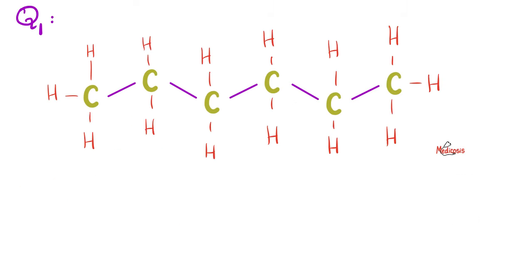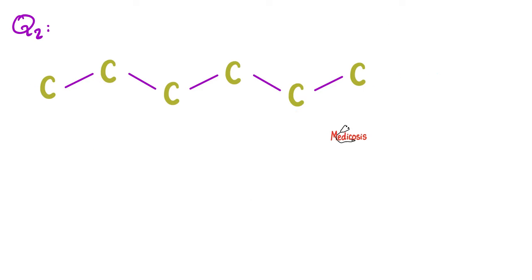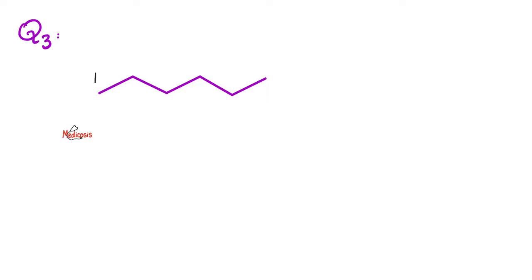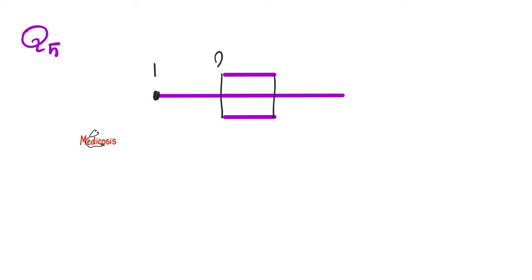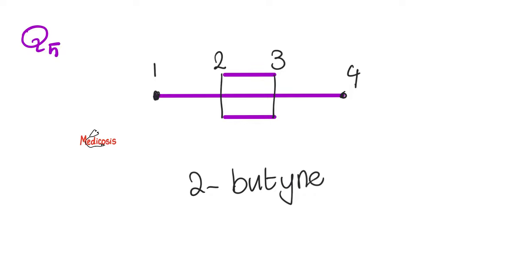Here is a six-carbon chain with all single bonds: hexane, a type of alkane. The skeletal structure shows the same molecule — hydrogens are hidden. Now look at a molecule with a triple bond: one, two, three, four carbons total. Four in organic chemistry means butyne. The triple bond is between carbons two and three, so you write 2-butyne — emphasizing the triple bond position. We will learn more about IUPAC systematic naming in the next video.